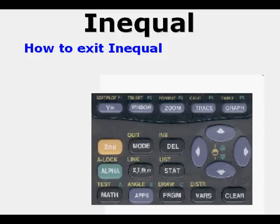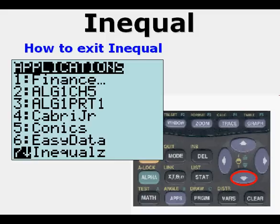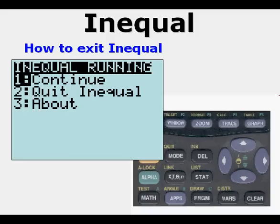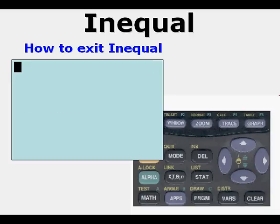Now, in order to exit InEqual, we exit much the same way we get into it by pressing the APPS key first, and then we scroll down to the application itself, in this case InEqual. And we press enter, and this time it gives us a menu. It realizes we're already in InEqual. So in this case, to quit it, we go down to quit InEqual and press enter.